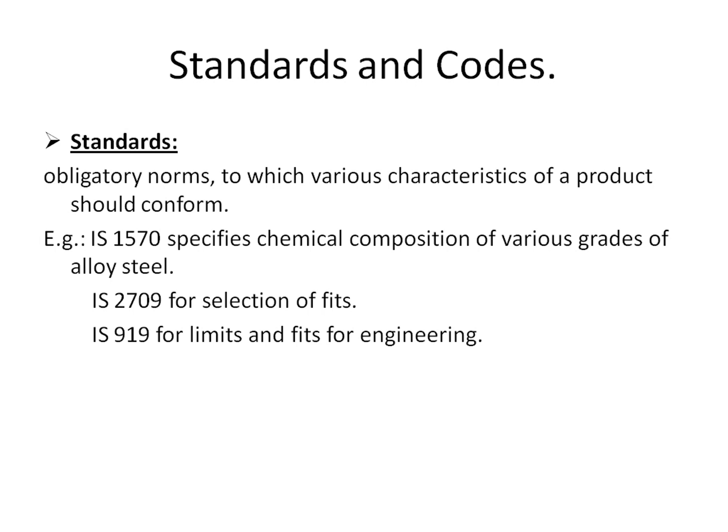Examples of company standards are SKF bearings — that is, there are certain rules or norms made by SKF company itself for manufacturing of bearings. National standards include BIS (Bureau of Indian Standards), ASME (American Society of Mechanical Engineers), and SAE (Society of Automobile Engineers). International standards are indicated by IS. For example, IS 1570 specifies the chemical composition of various grades of alloy steel, IS 2709 has rules for selection of fits, and IS 919 has norms for selection of limits and fits for any component.